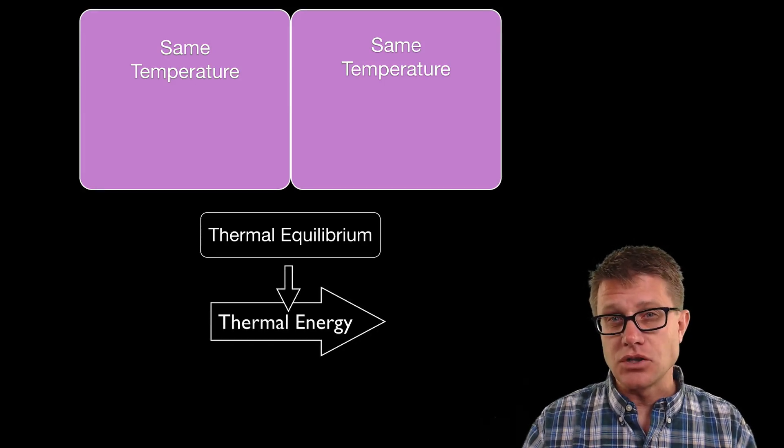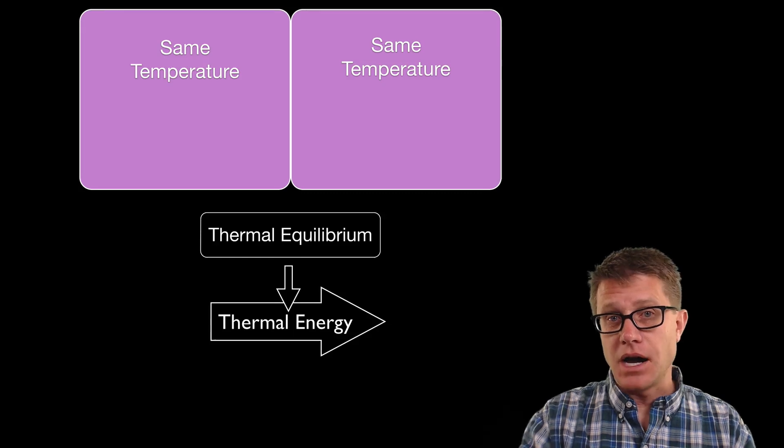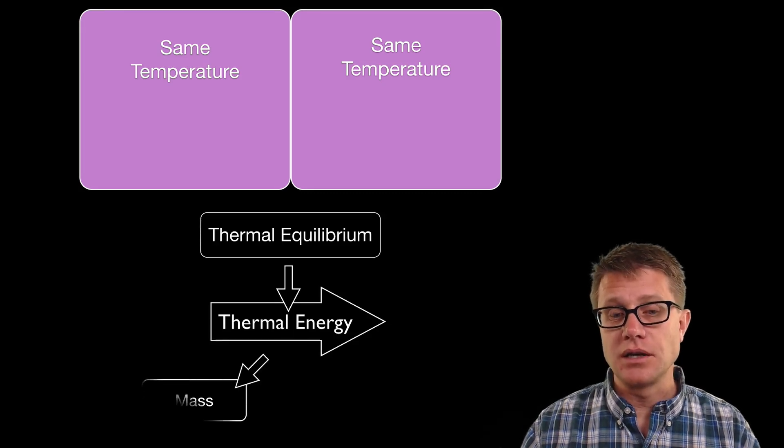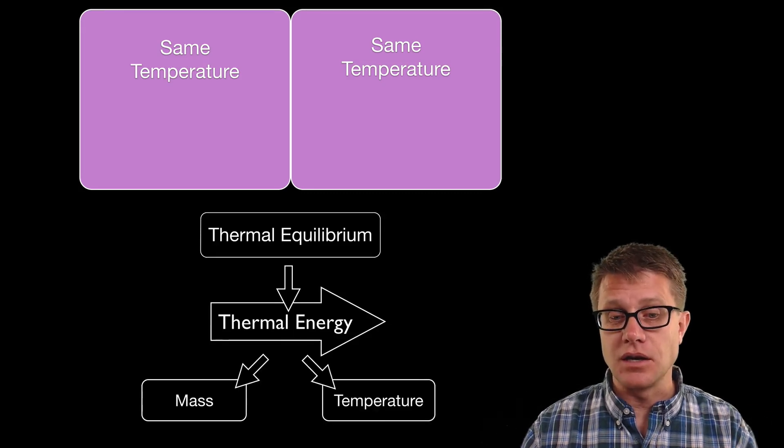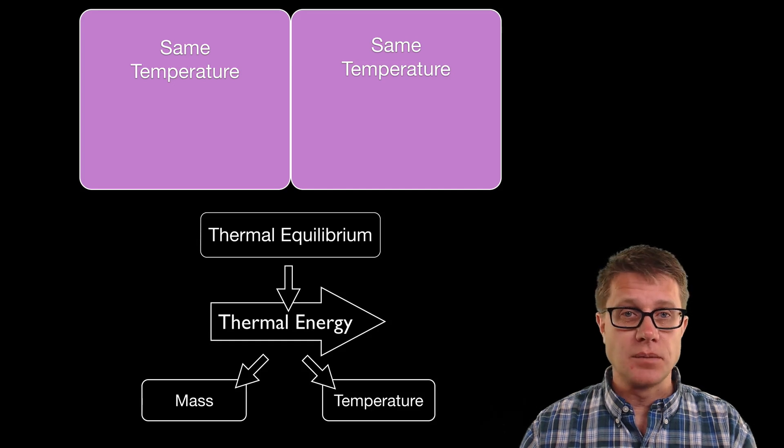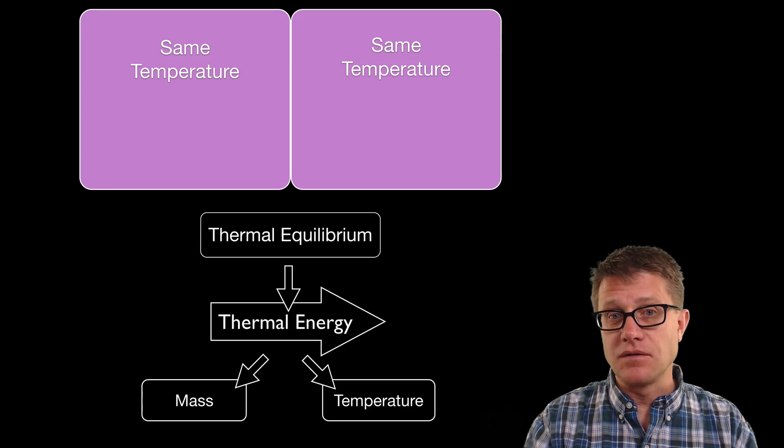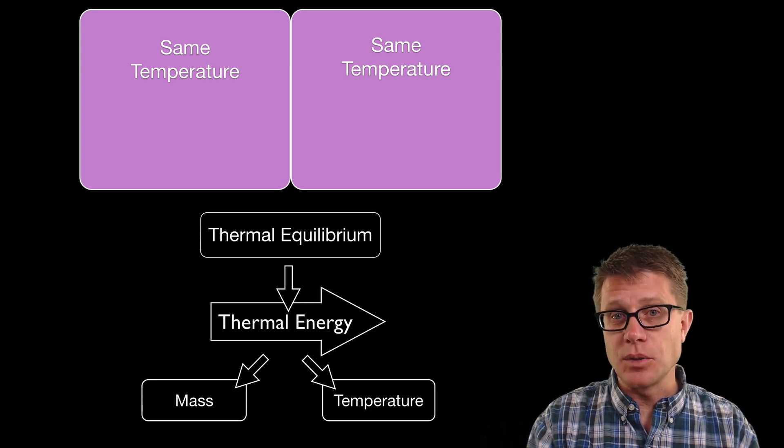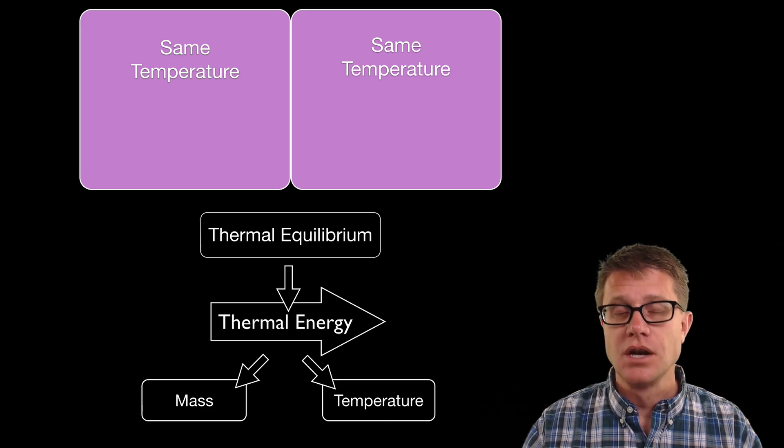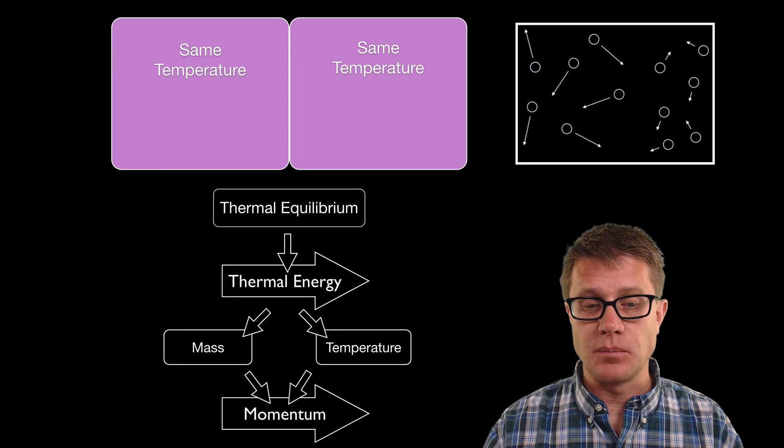The amount of thermal energy that is transferred from the hotter to the colder object is related to the mass of the object and also the temperature. So if the object on the left is much more massive than the one on the right and at a higher temperature, it is going to transfer more energy than if it had a lower mass and lower temperature.